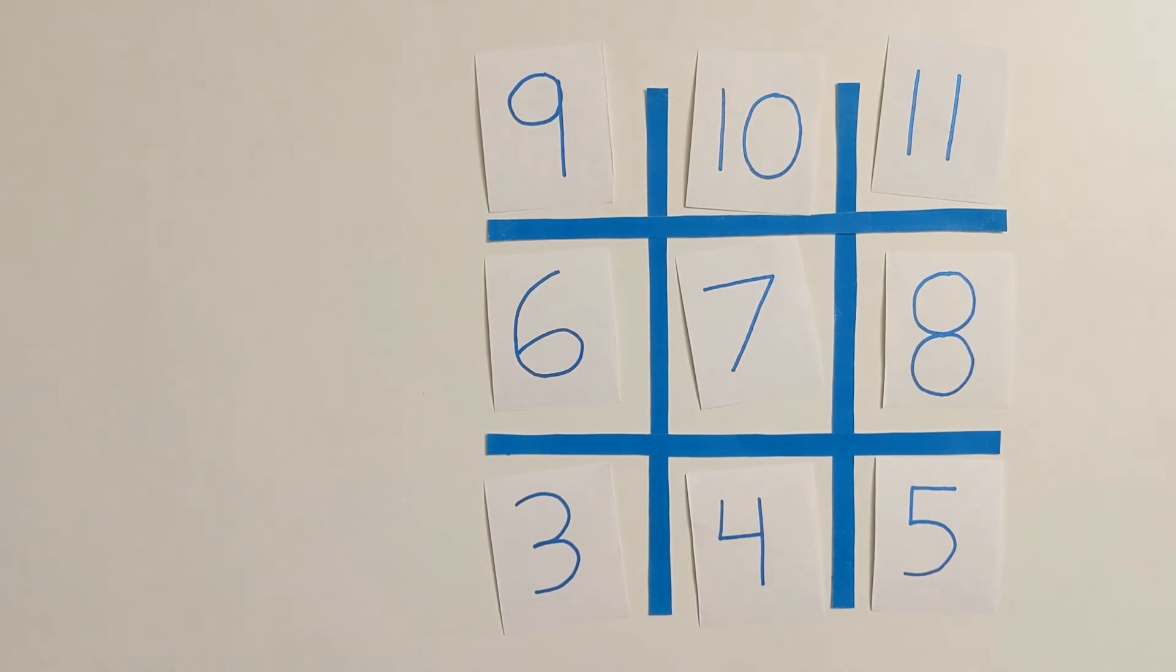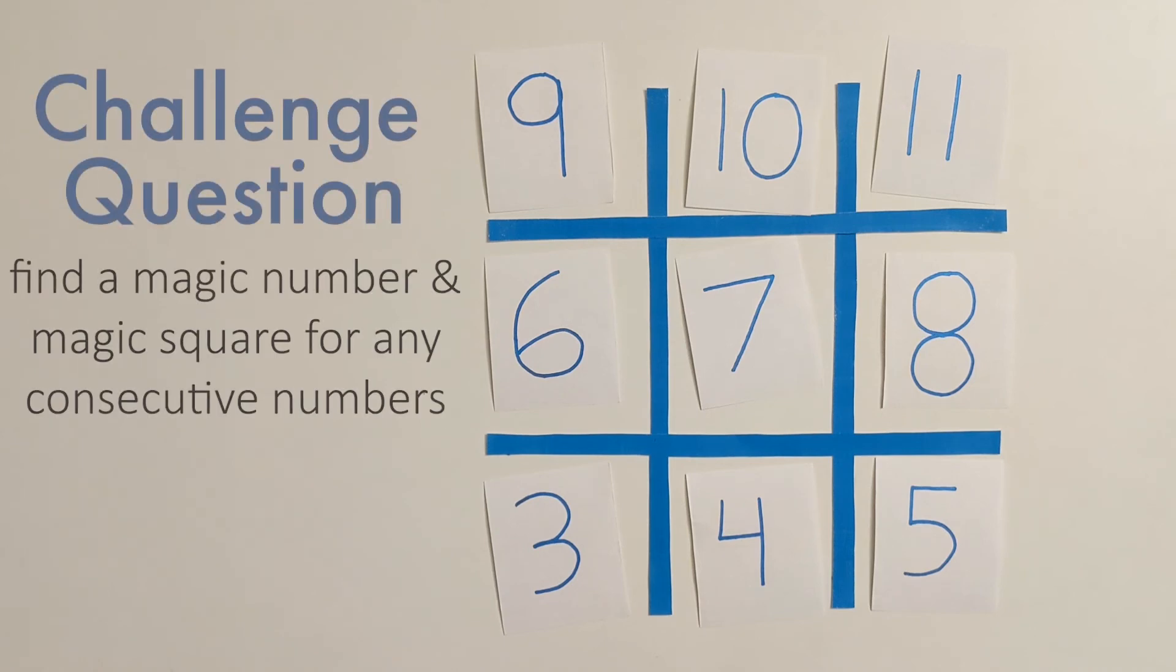What about 4 through 12, or 5 through 13? Let's go even larger. Can you figure out a magic square for any 9 consecutive numbers?